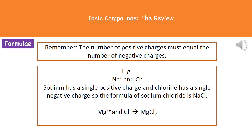The last thing you need to know is how to write ionic formulae. The first rule is that the number of positive charges must equal the number of negative charges. For example, sodium has a single positive charge (Na⁺) and chlorine has a single negative charge (Cl⁻), so they join together to make sodium chloride: NaCl.